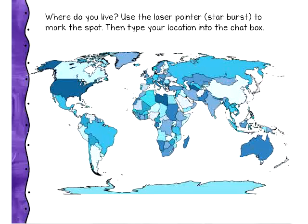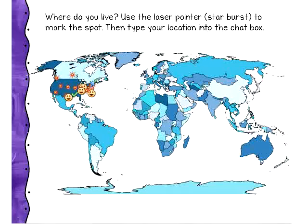We want to learn a little bit about you. If you would use the whiteboard tools and put a mark where you are — I'm in Fayetteville, North Carolina — and also type where you're from in the chat area, so we can all see where everybody is. Usually we have a lot of people on the East Coast because of the timing, and it's a little harder for people in other parts of the US and definitely in other parts of the world.